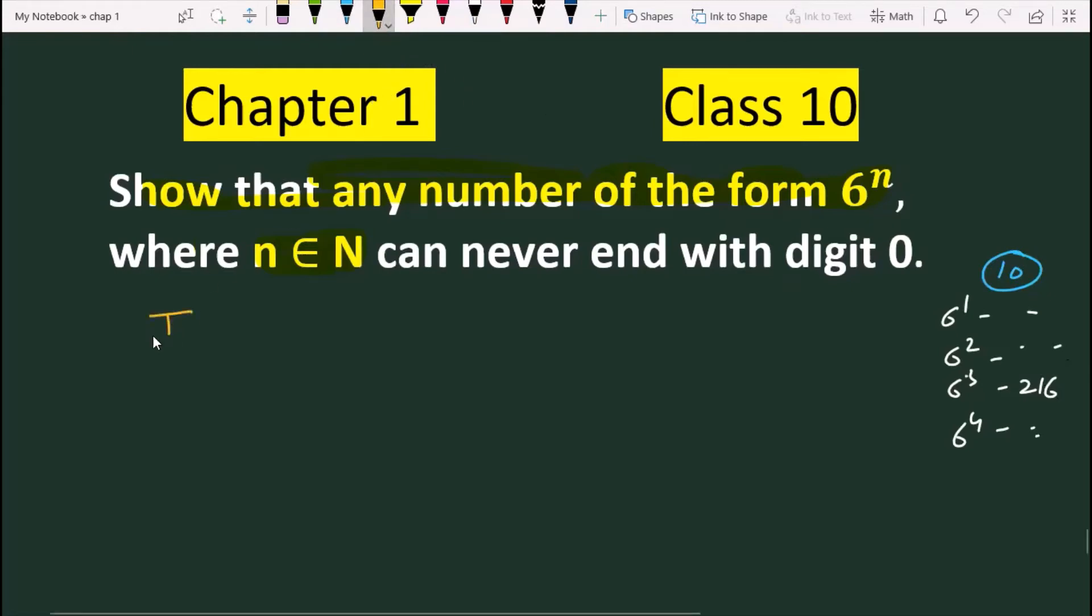So we will write: if 6 to the power n ends with 0, then it must have 2 and 5 as factors. Both 2 and 5 should be factors.